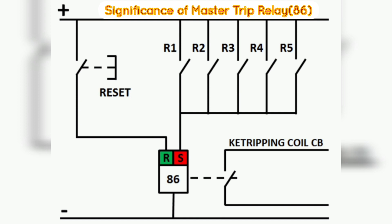If we use a Master Trip Relay, we need to carry only two wires to the tripping coil. Third, the Master Trip Relay has multiple contacts that can be used for interlocking, for tripping other breakers, annunciation, and signaling to PLC or SCADA.